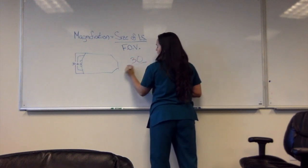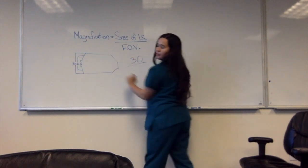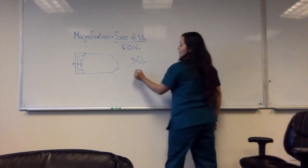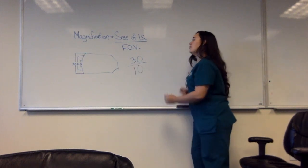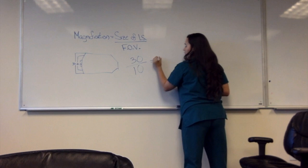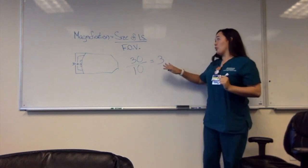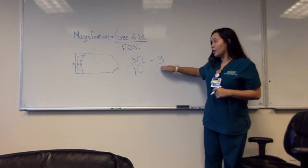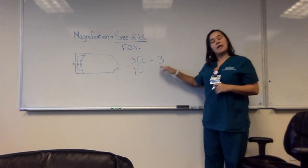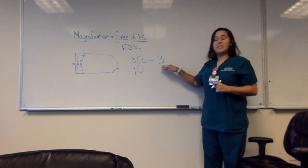So I would take 30 divided by, and let's say I use the field of view of 10. So I would divide that by 10, which would give me 3. So using the 10, I would increase the size of the image 3 times.